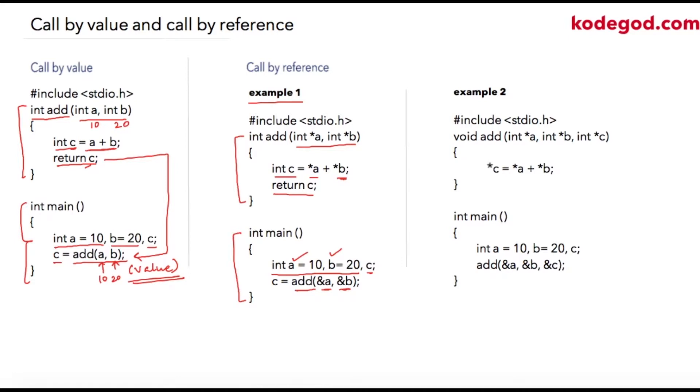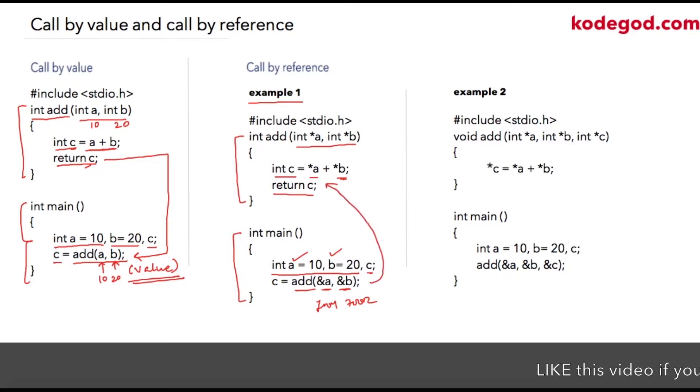So whatever the address location would be like 7001 or 7002, that address will be passed over here. So what technically is happening over here is star a will be equal to address of a and star b equal to address of b.